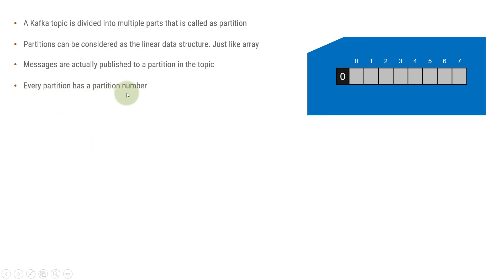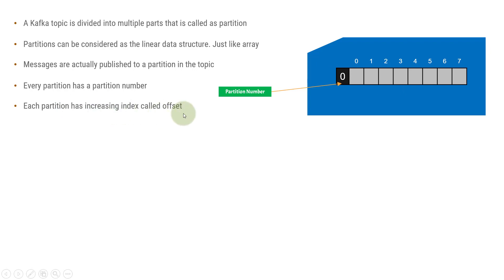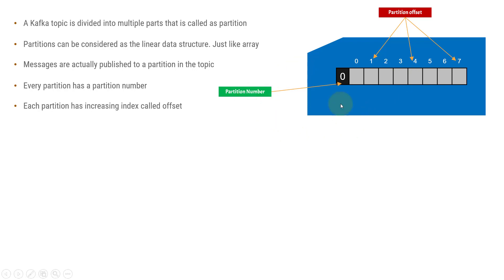Every partition has a partition number. If you create partitions inside a Kafka topic, they will have a partition number — for example, zero is the partition number for a particular partition. Each partition also has an increasing index called an offset. If this is an array, it will have its own index: zero, one, two, three, four — and it goes up depending on how much data is stored.